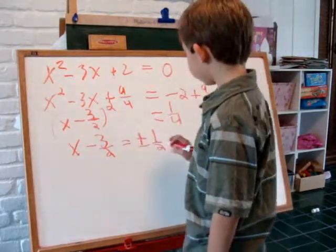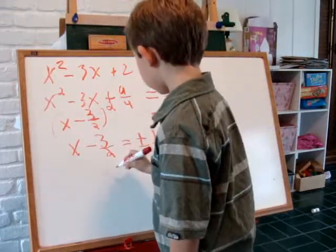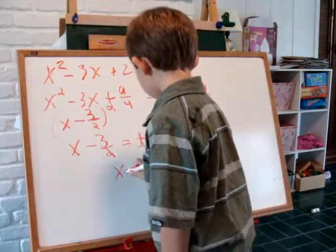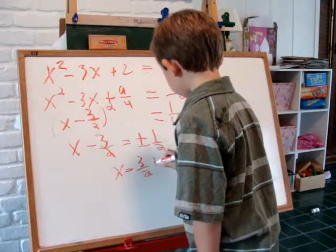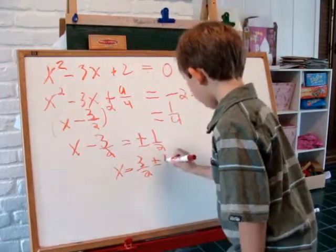We add 3 halves to both sides of the equation. x equals 3 halves plus or minus 1 half.